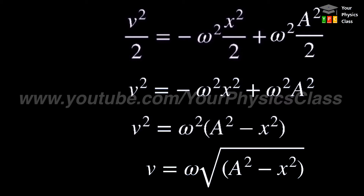This equation gives the velocity of a particle performing linear SHM. In this equation, omega and a are both constants, while velocity and displacement are variables. Hence, velocity depends on the displacement of the particle.